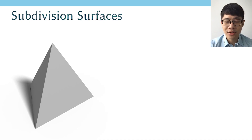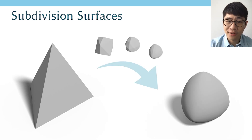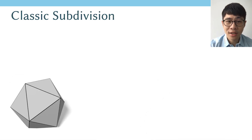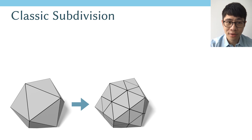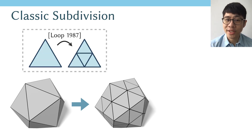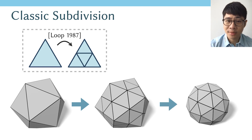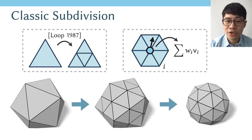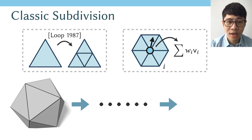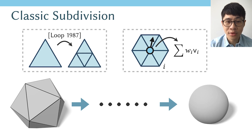Subdivision is a widely used technique in 3D modeling. Starting from a coarse mesh on the left, subdivision recursively refines the mesh into a smooth and high resolution one. Classic subdivision consists of two steps: first, upsample the geometry — in loop subdivision, we split each triangle into four small ones — and next, update the vertex positions using predefined rules, such as a weighted average between neighboring vertices. Recursively applying these two steps produces a smooth, high resolution shape.